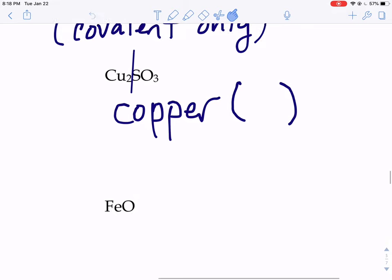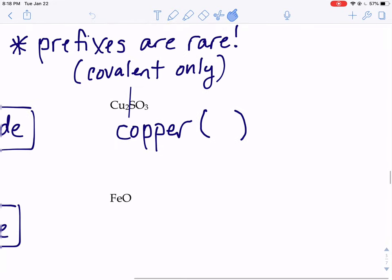Sulfite. Okay. So I know I can write the word sulfite. That's the name of SO3. But how do we figure out what the Roman numeral is?